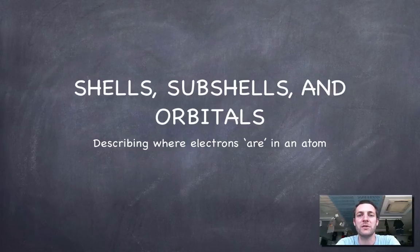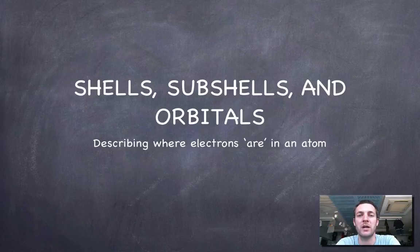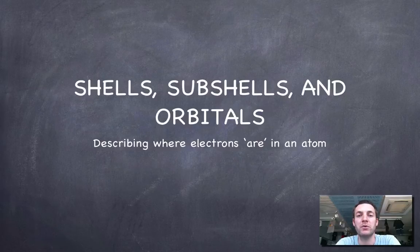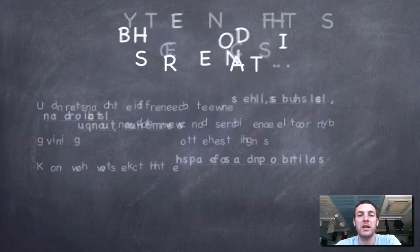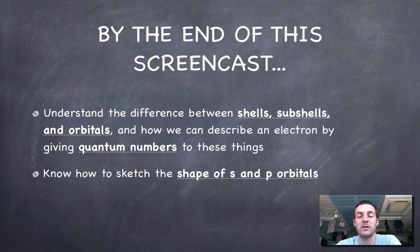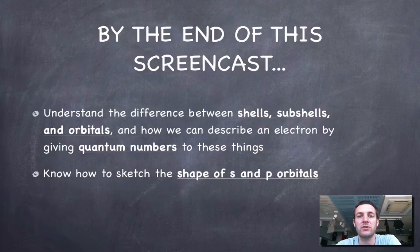Hello and welcome to this film which is all about shells, subshells and orbitals. It's the third in a series of four films about higher level atomic structure for the IB Chemistry course. And as promised in the previous film, here we're going to be looking in a bit more detail at where electrons are in atoms. So hopefully by the end of this film you'll know the difference between a shell, a subshell and an orbital. You'll know how to define an orbital, and you'll be able to describe where an electron is in an atom by using quantum numbers.